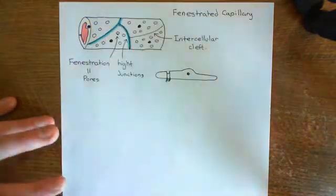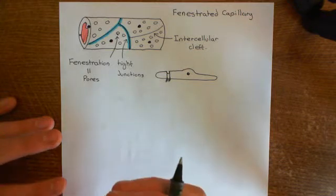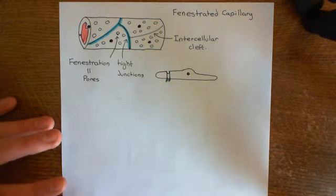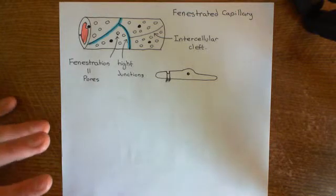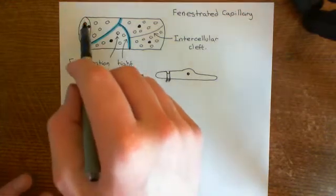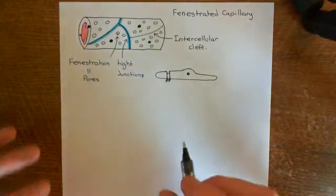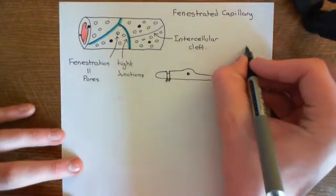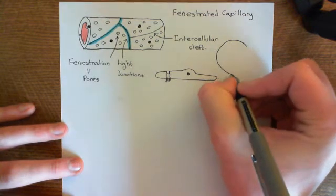These little pores are too small to allow cells to move through them. In addition, they have mechanisms to stop coagulation factors moving through them. So let me explain what these mechanisms to prevent coagulation factors from moving through are — we'll look at the cross-sectional view of this fenestrated capillary.